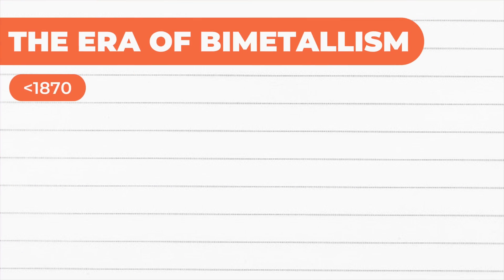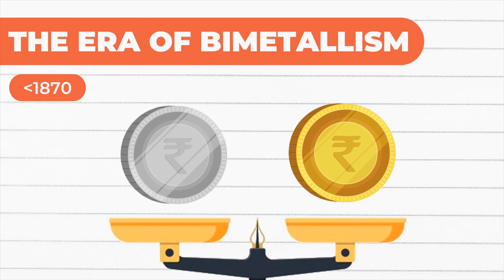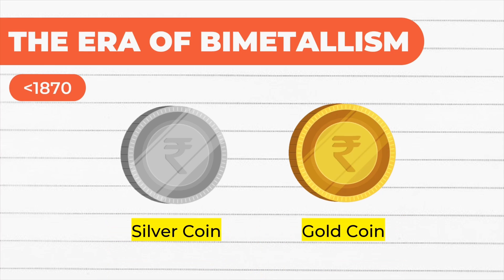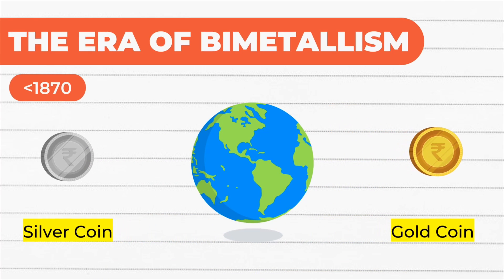Number 1: The era of bimetallism. Before 1870, the international monetary system consisted of bimetallism, where both gold and silver coins were used as the international modes of payment. The exchange rates among currencies were determined by their gold or silver contents. Some countries were either on a gold or a silver standard.